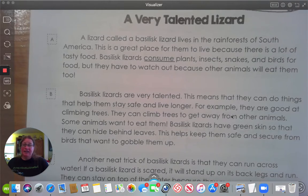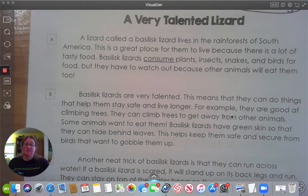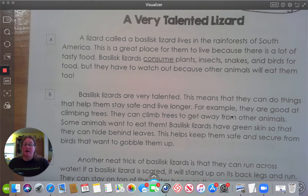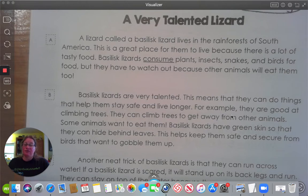A lizard called a basilisk lizard lives in the rainforests of South America. This is a great place for them to live because there is a lot of tasty food. Basilisk lizards consume plants, insects, snakes, and birds for food, but they have to watch out because other animals will eat them too.